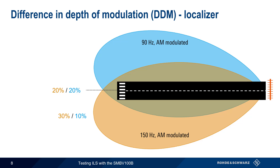At the far right edge of the localizer pattern, we see the 150 hertz lobe at 40% AM modulation depth, with a zero modulation depth, so to speak, on the 90 hertz lobe.